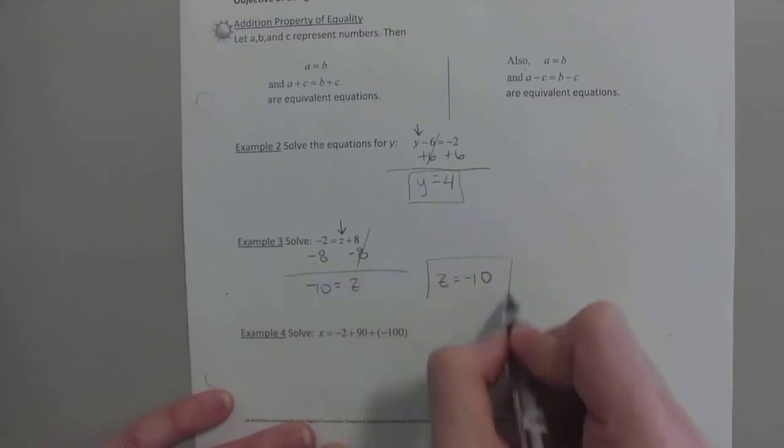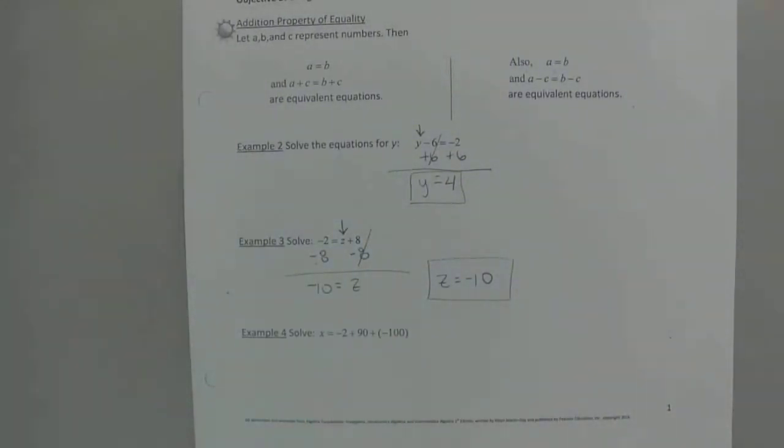So some of you might like to flip it around because you just don't like that variable on that side. That's fine. So negative 10 equals z, or z equals negative 10. And again, you can check it by plugging it in. With negative 10 plus 8, negative 2. So you have the correct solution.